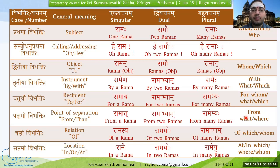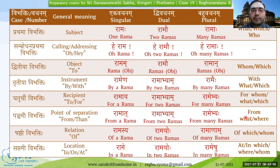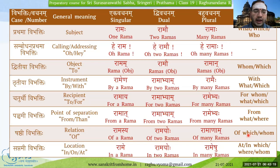The Panchami Vibhakti is 'from where' or 'from what,' and also for comparison. Kasmaad karanat — 'for what reason.' Kutaha agachati — 'from where does he come?' Kutaha is another word for 'from where.' Similarly, Kasmaad itchute nagarat — 'from the town he comes.' The Shashthi Vibhakti is for relation: 'of whom,' 'of which,' or 'whose.' For example, Kasya pustakam etat — 'whose book is this?' The Saptami Vibhakti can be used for multiple prepositions: at what time, at which place, where, in whom, etc.